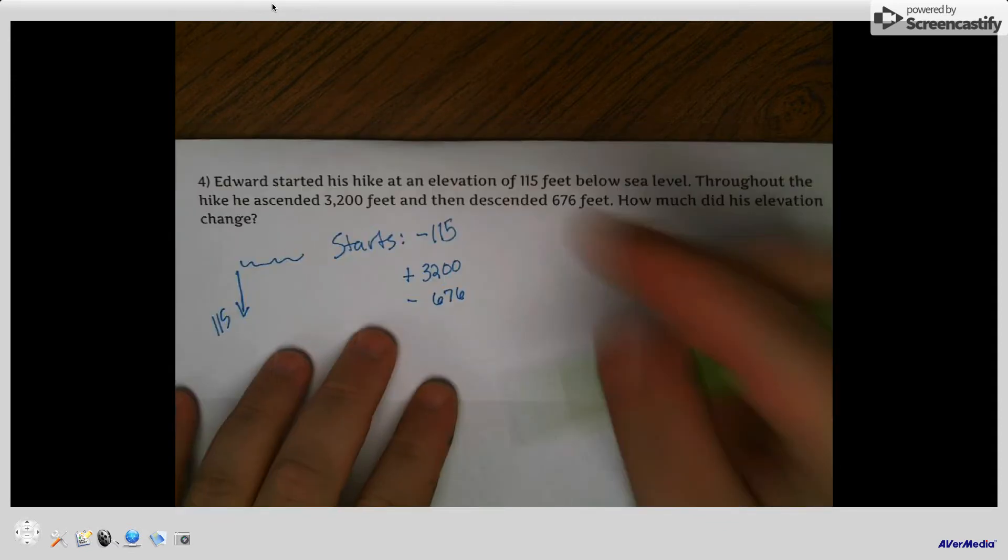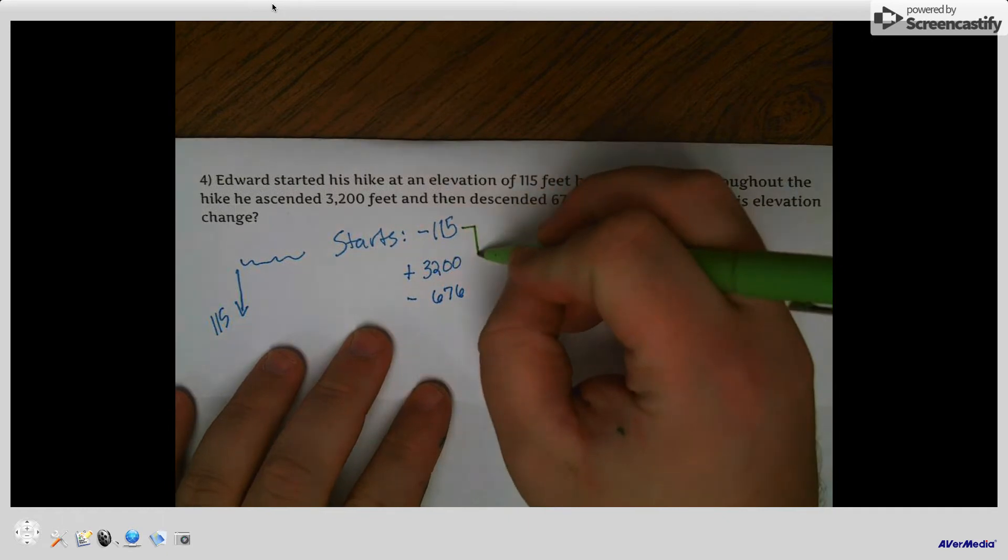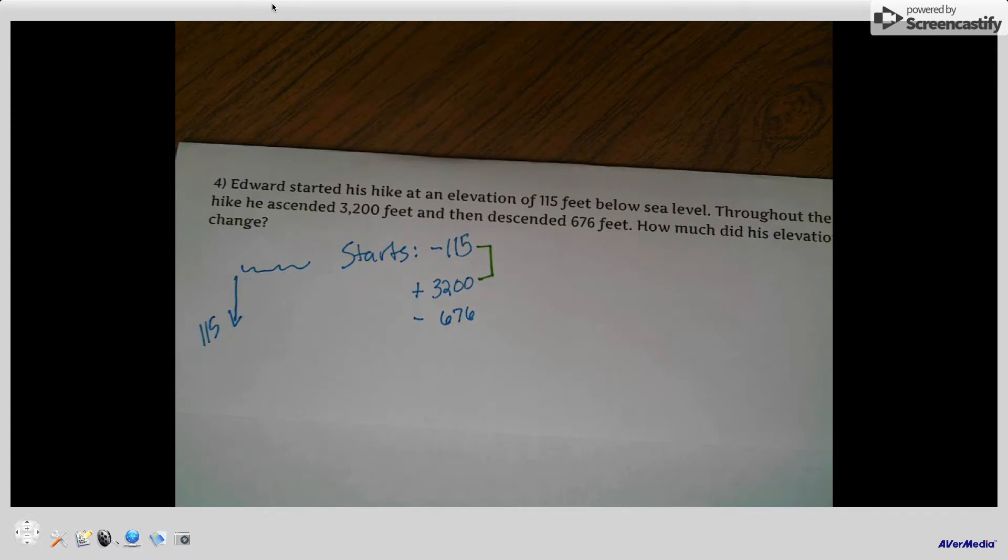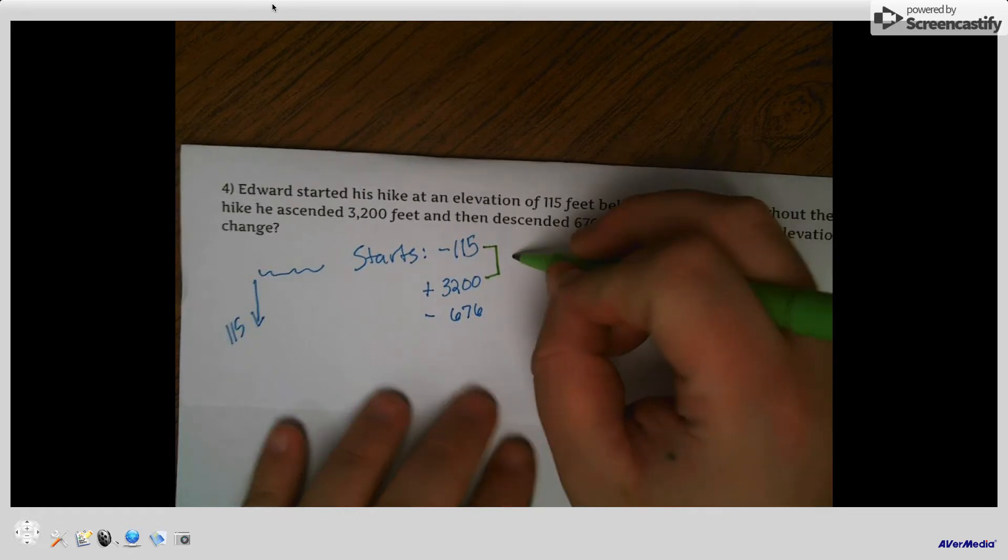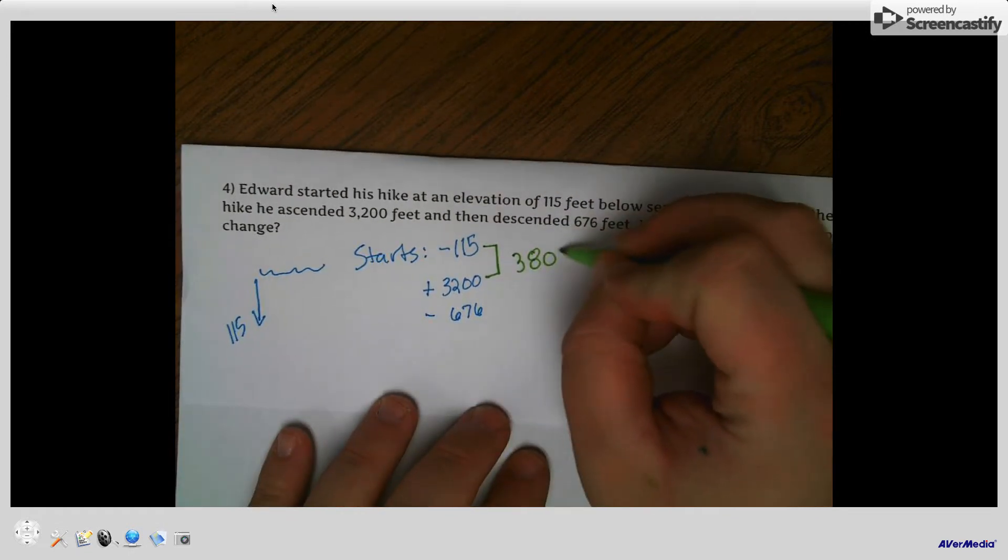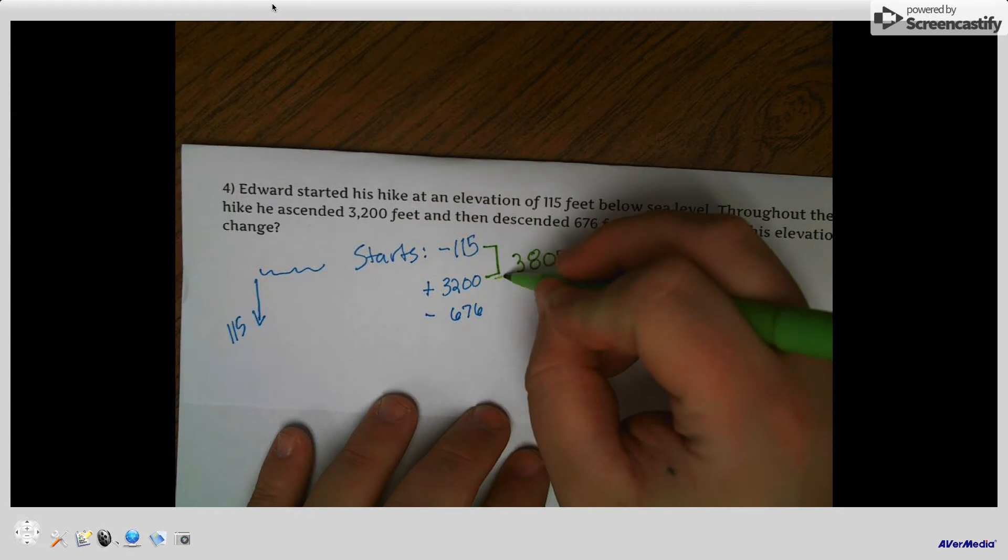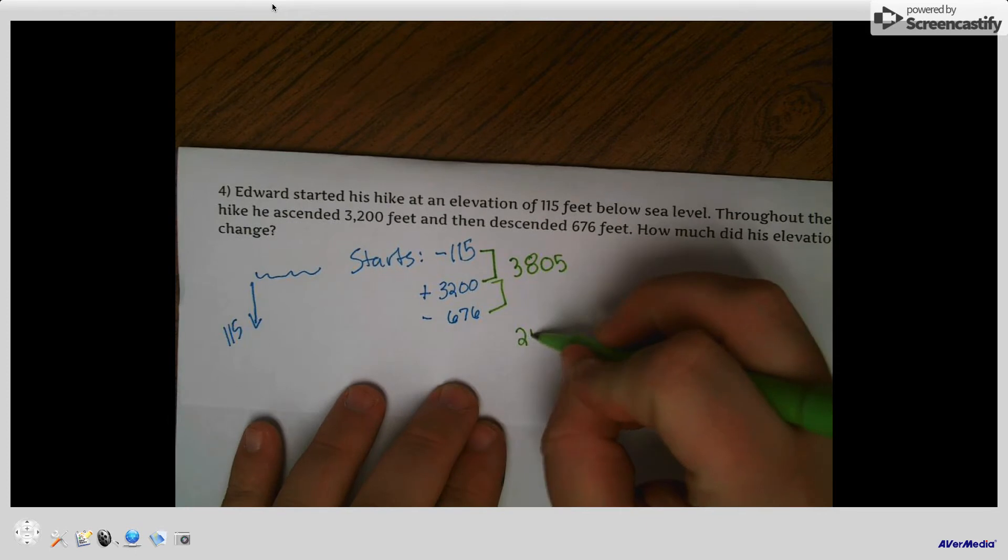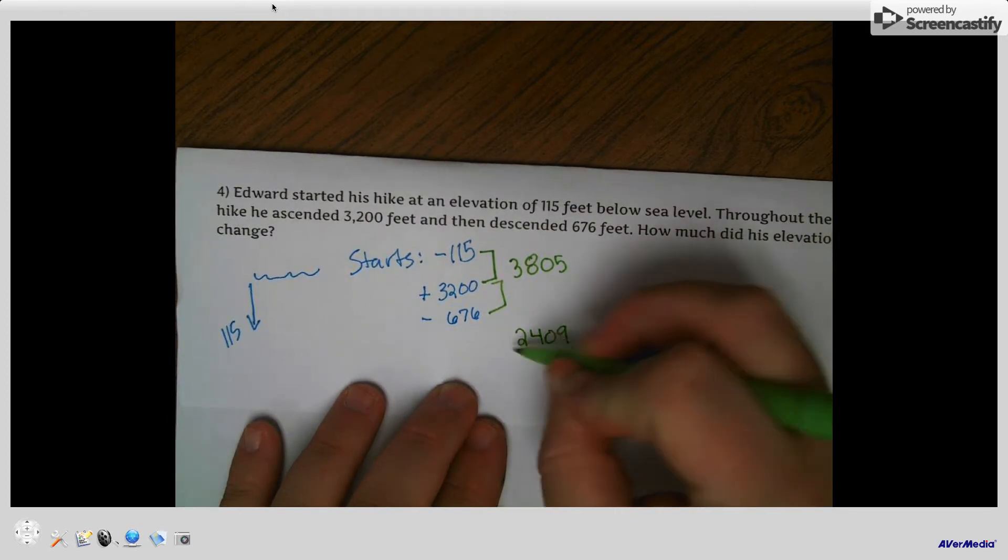Well, from negative 115, and then we add 3,200. And by the way, you're welcome to use a calculator. I think it's like 3,085. Let's check that out. Check my math. Yeah, 3,085. So now he's at an elevation of 3,805. And then between 3,805, you've got to subtract 676 from that. And so now he ends at an elevation of 2,409. That's where he ends.